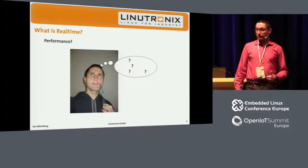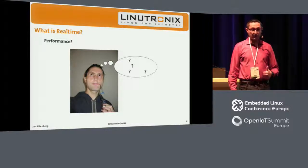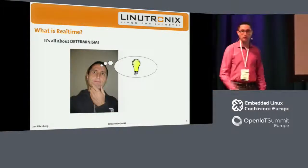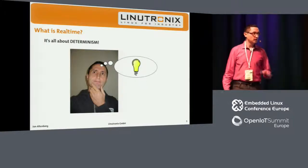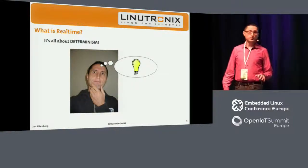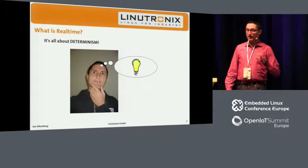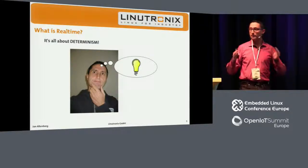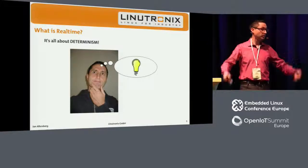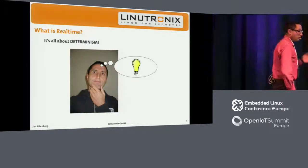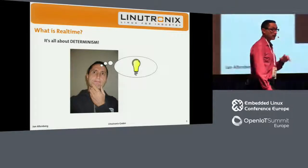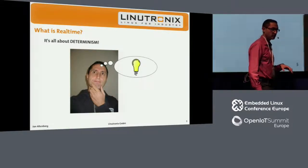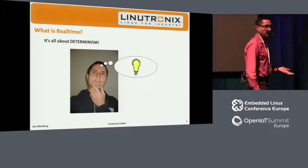It's not about fast responsiveness. It's not about performance. Basically, it's all about determinism. When we talk about real-time, we talk about timing guarantees. You need to execute something in a specific time frame, and you need a guarantee for that. The definition would not be 'as fast as possible' — it would be 'as fast as specified.' And this is the thing which is important about real-time.